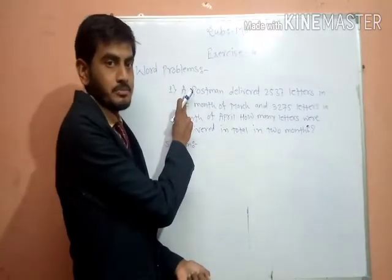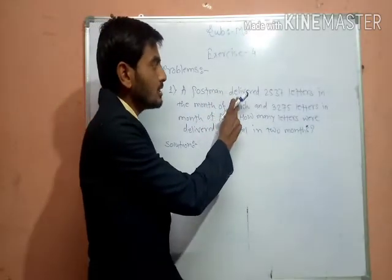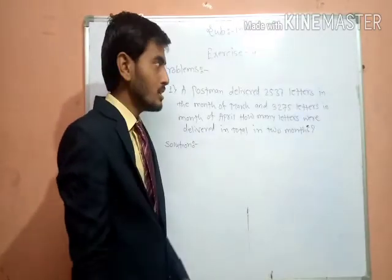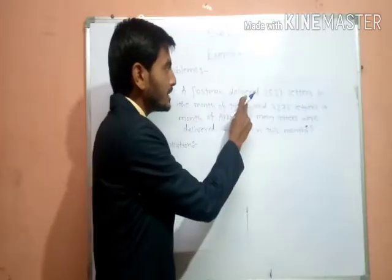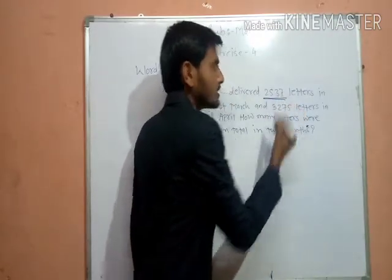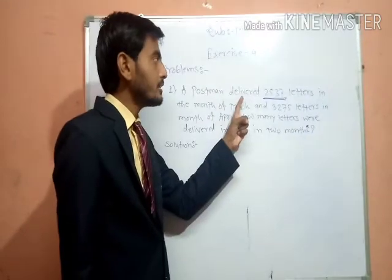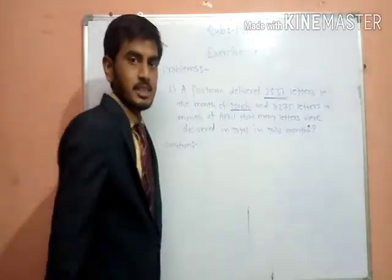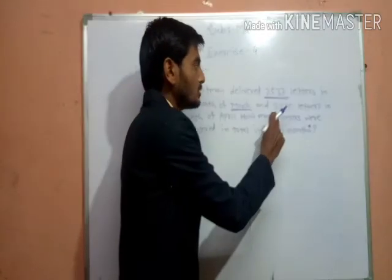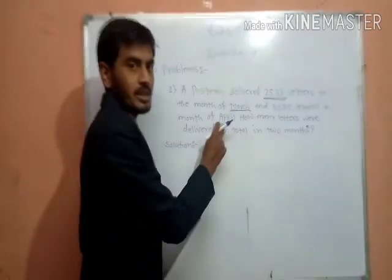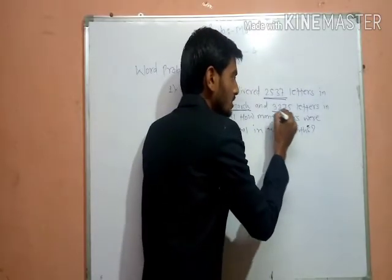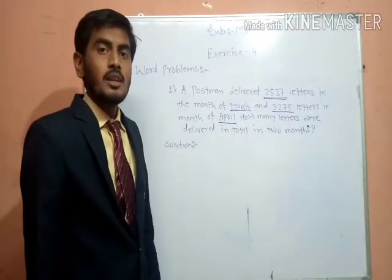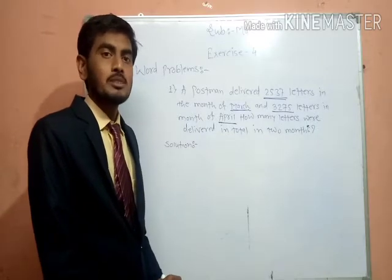The postman delivered 2,537 letters in the month of March — that is our first condition. Then, 3,275 letters in the month of April — that is our second condition. Now we need to find how many letters were delivered in both months, so we calculate.